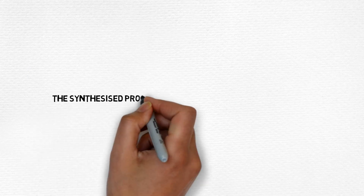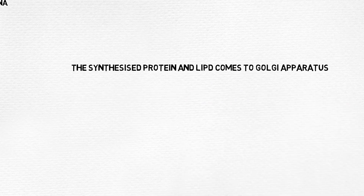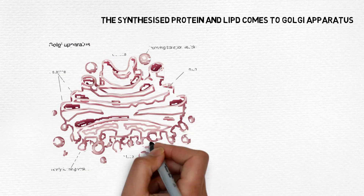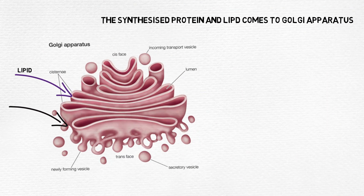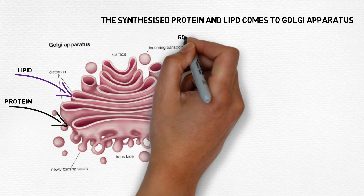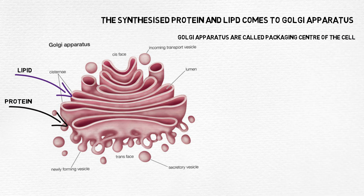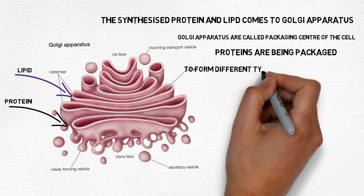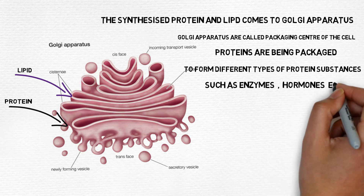The synthesized protein and lipid then come to the Golgi apparatus, which is an important cell organelle. The Golgi apparatus helps in packaging and delivery of materials and is called the packaging center of the cell. The proteins that arrive at the Golgi apparatus are changed into different shapes and transformed into products like enzymes and hormones.